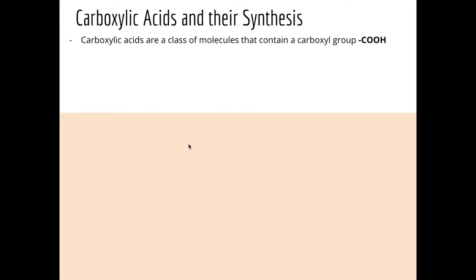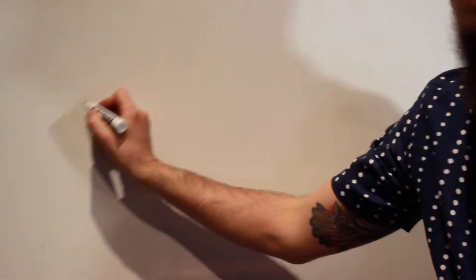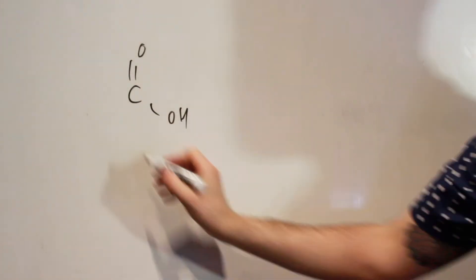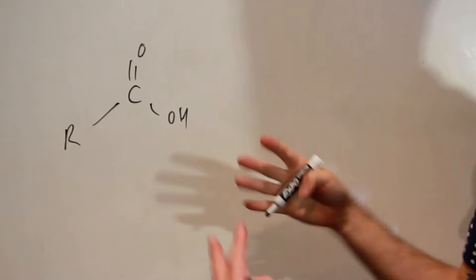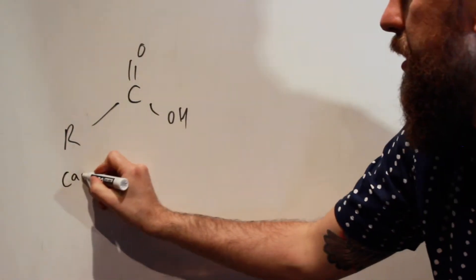Carboxylic acids are the final homologous series we're going to look at. They are a class of molecule that has a carboxyl group. We have a carbon, the carbonyl, and it also has the hydroxyl — the rest of the molecule makes a carboxyl. Carbonyl plus hydroxyl together gives you a carboxylic acid.